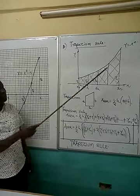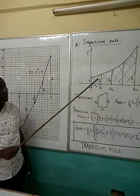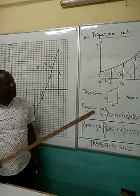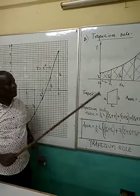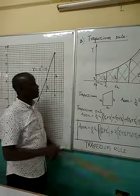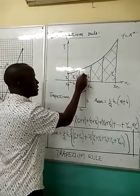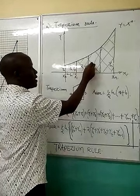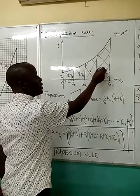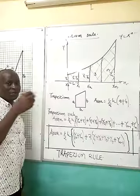Now if this is my curve, I can end up obtaining certain number of trapeziums from this curve. From this curve, I'll have the following trapeziums. I'll have the first trapezium here, I'll have the second trapezium, I'll have the third trapezium.